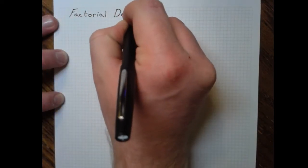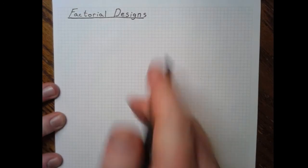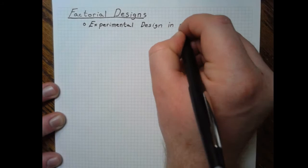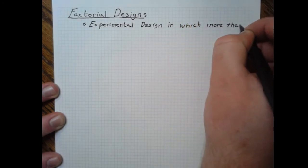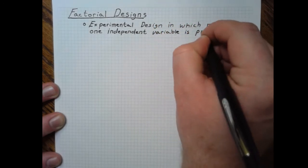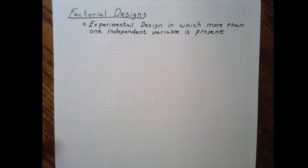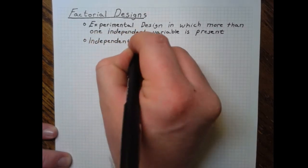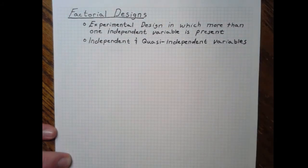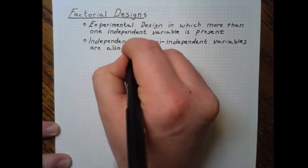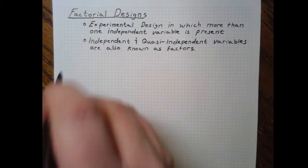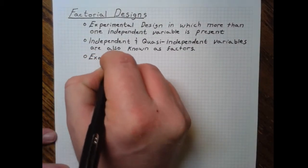What we'll be touching on in this video is factorial designs. Factorial designs are a type of experiment or study in which you have multiple independent variables — could be two, could be three, could be four. However, the more you add, the tougher it is to understand the results. The name factorial comes from the fact that quasi-independent variables as well as independent variables are also known as factors. So a factorial design is designed with multiple factors.